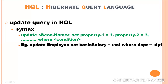An example in HQL: 'update Employee' — where Employee is the bean name — then 'set basicSalary = ?' where basicSalary is a bean property, using a question mark as a placeholder, followed by a where condition column.